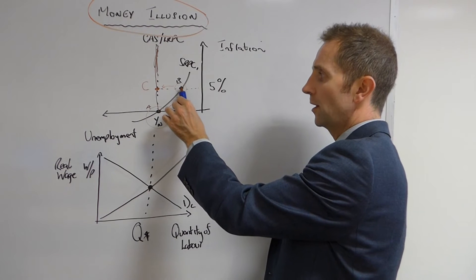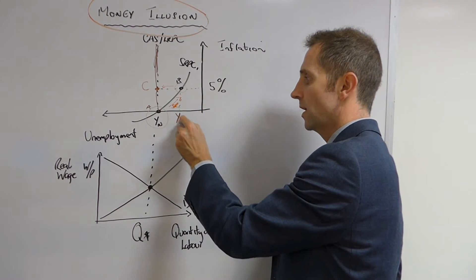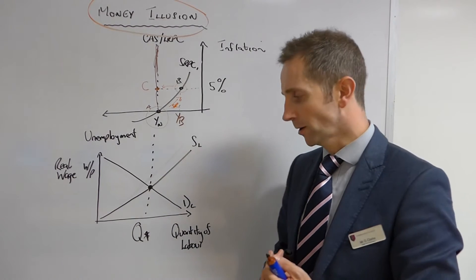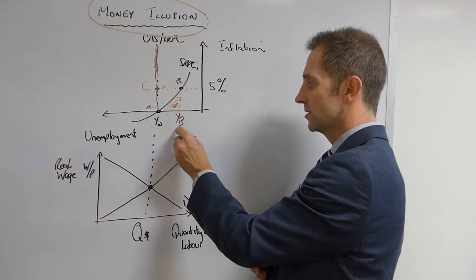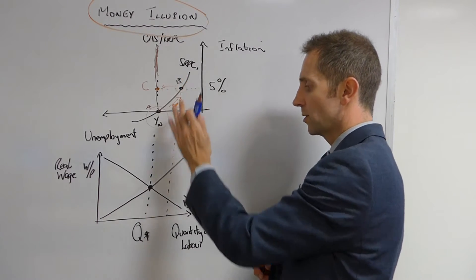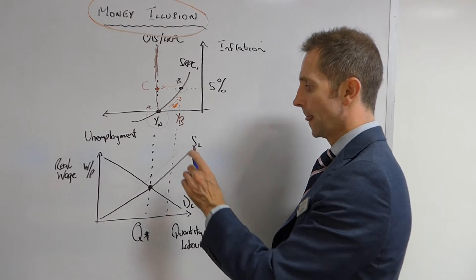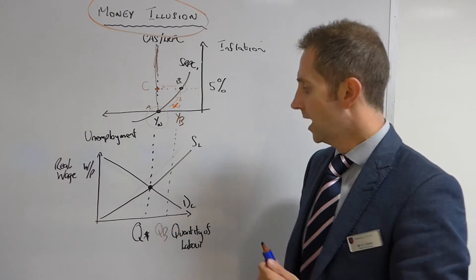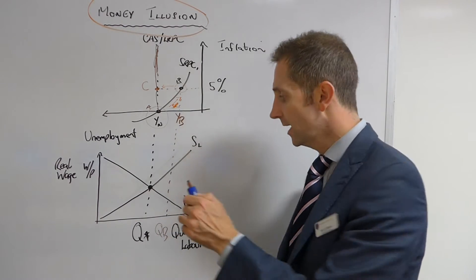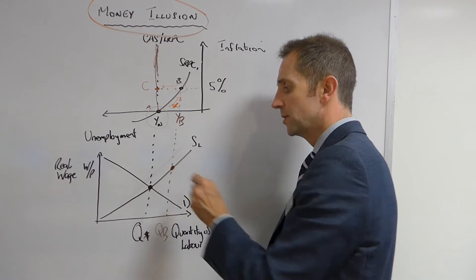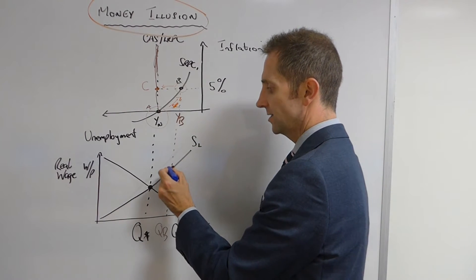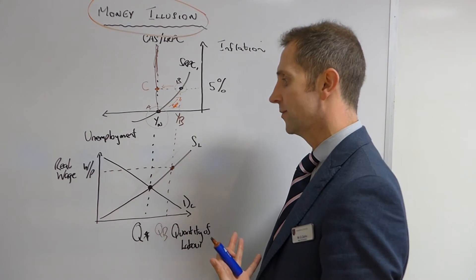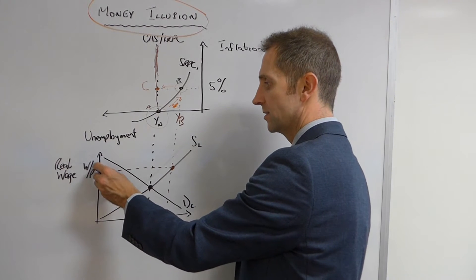But let's just consider, in order for output to be at point B, so if we say that's YB, we would then need obviously a higher number of workers supplying their labor into the labor market. So if we continue this line down from our real economy to the labor market, in order for YB level of output to be produced, we would really need QB amount of workers. And for QB amount of workers to supply their labor, we would need to be operating at this point on the supply curve. Now, let's take that across to our Y-axis and let's have a consideration as to the level and the significance of that real wage. So we'll call this, let's call it WB.